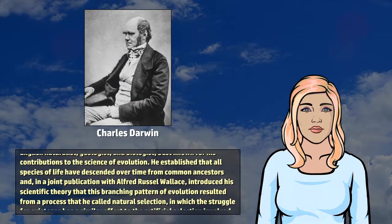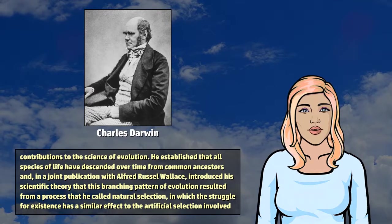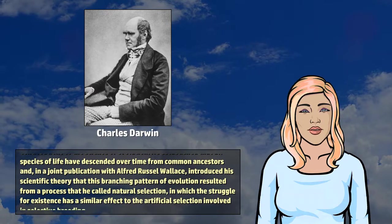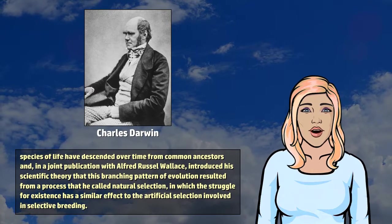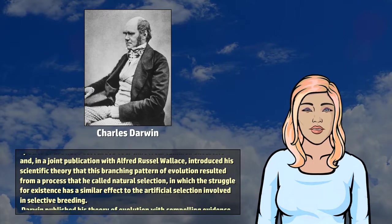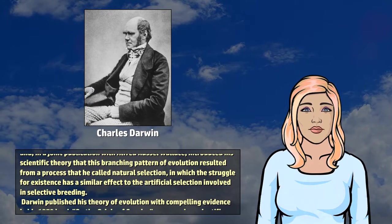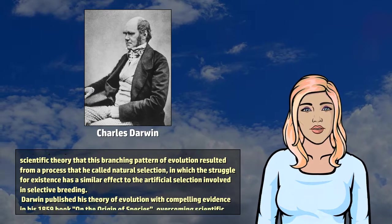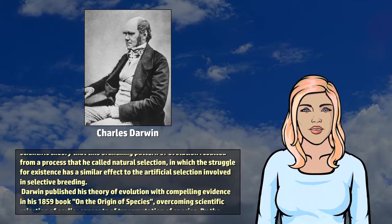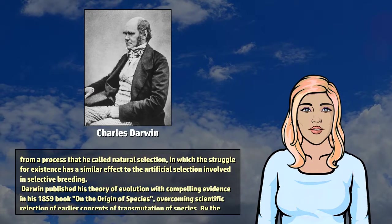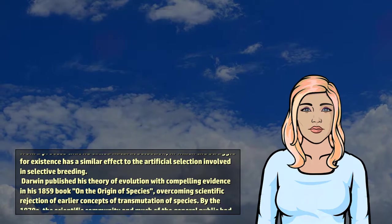He established that all species of life have descended over time from common ancestors, and in a joint publication with Alfred Russell Wallace, introduced his scientific theory that this branching pattern of evolution resulted from a process that he called natural selection, in which the struggle for existence has a similar effect to the artificial selection involved in selective breeding.